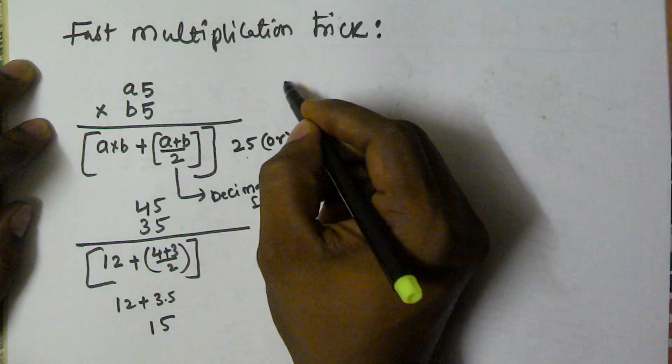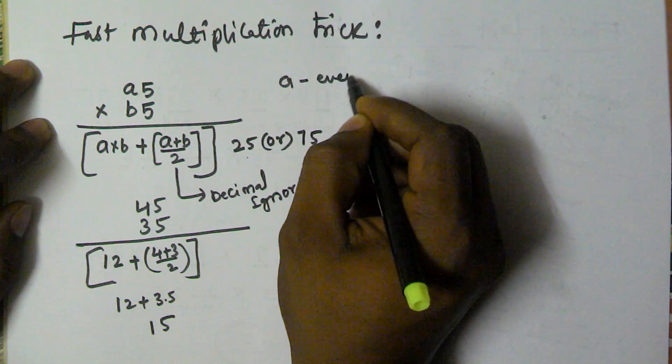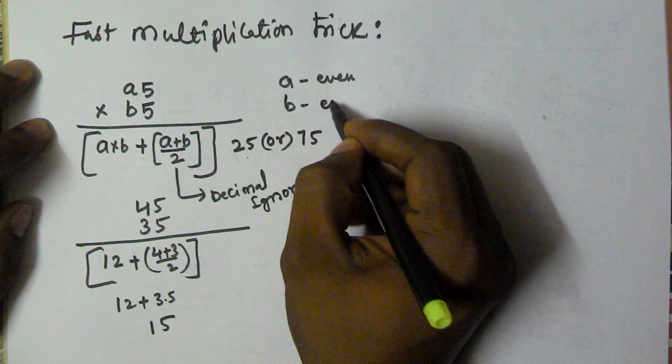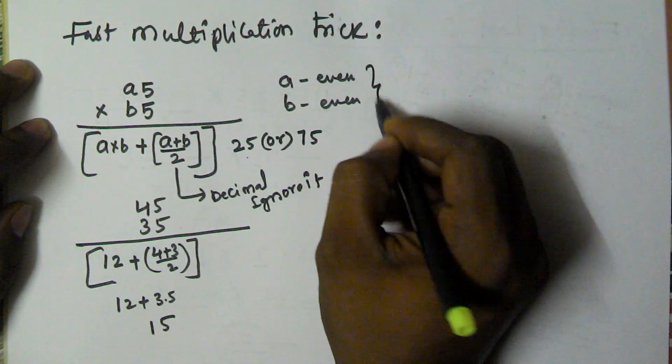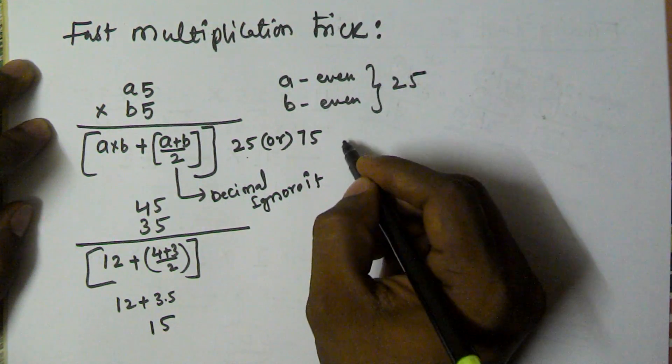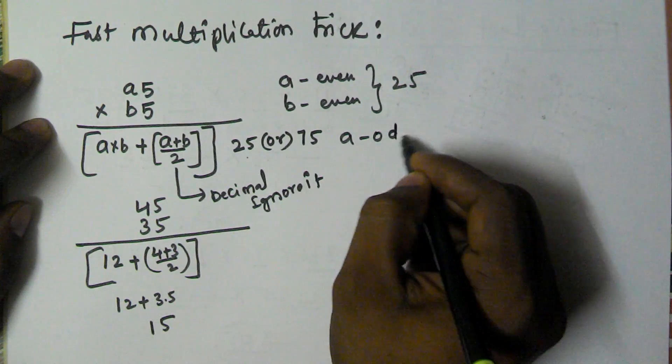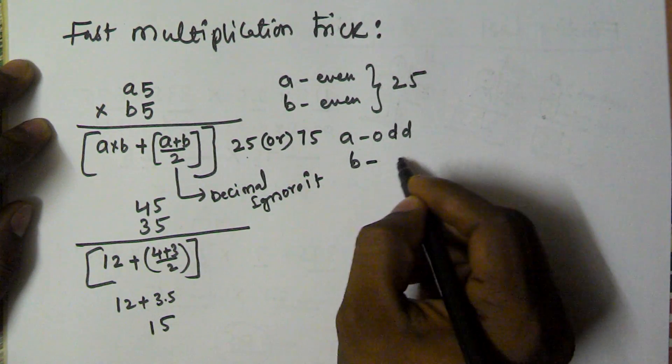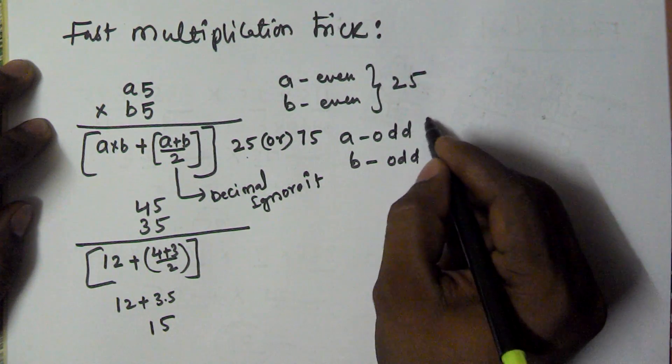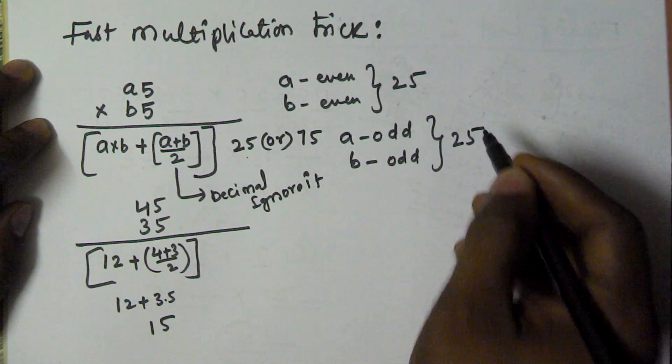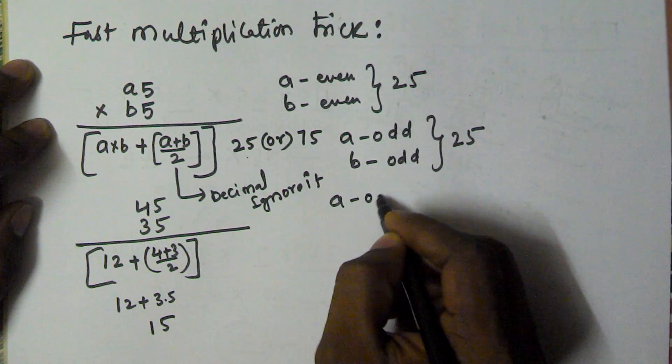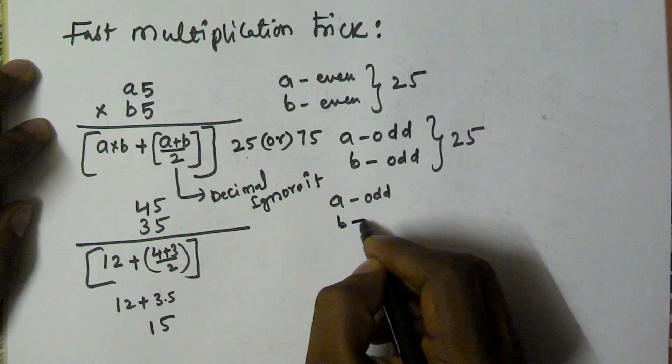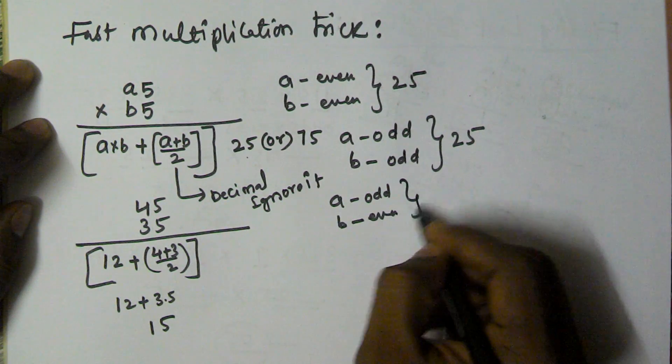If a is even and b is even, we take 25. If a is odd and b is also odd, we take 25. If a is odd and b is even, we take 75.